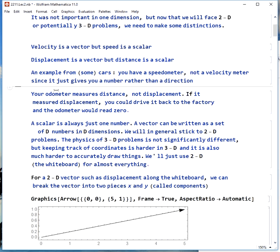Similarly, your odometer measures distance instead of displacement. If it measured displacement, you could have 150,000 miles on a car, and if you drove it back to the factory, the odometer would say zero.